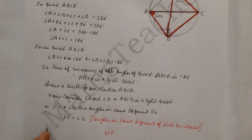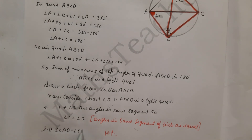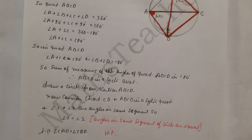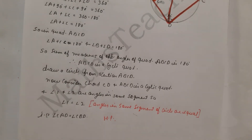So angle one equals angle two, that is angle CAD equals angle CBD. I hope you have understood this question. If you have any doubt, please comment in the box. Thank you.